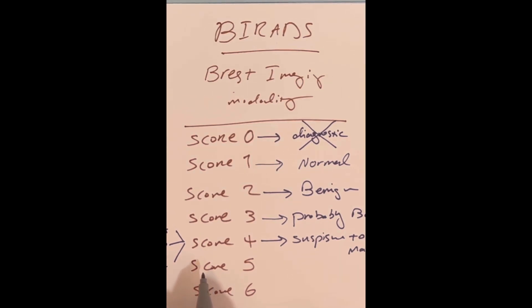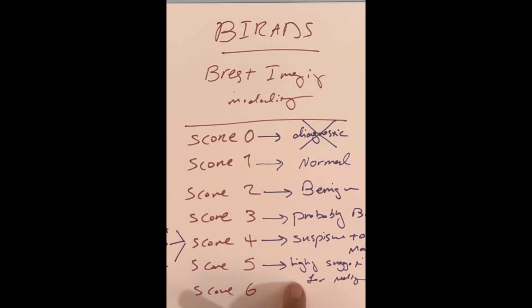Score 5 means it is highly suggestive for malignancy, and you should have a core needle biopsy. This is necessary because it may be malignant and it's important for your treatment.